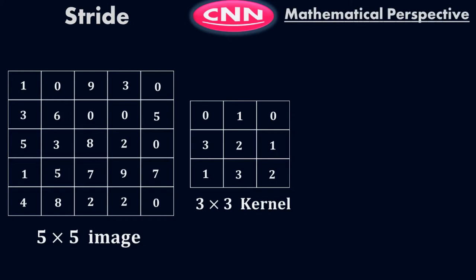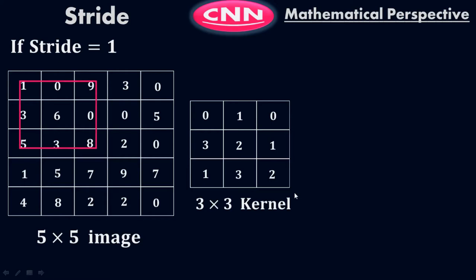Let me give you a mathematical perspective on how stride works — what is the phenomenon behind stride. For example, this is a given image which is 5x5, and here is the kernel or filter which is 3x3. I want to use this kernel and this input image to reduce the dimension from 5x5 to a lower dimension. How I can do that depends on the stride. If stride equals 1, I pick this matrix and use the kernel 3x3 — if stride equals 1, I leave one column here and then again one column here.